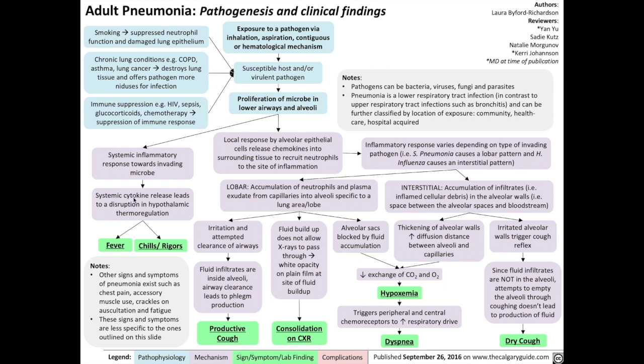There's a systemic cytokine release, which results in a disruption of thermoregulation by the hypothalamus. That results in fever, chills, and rigors.